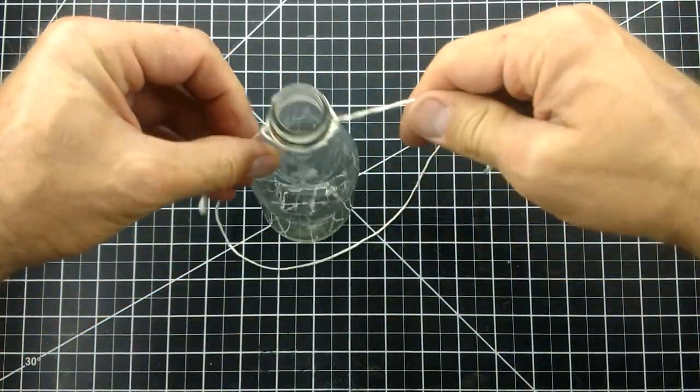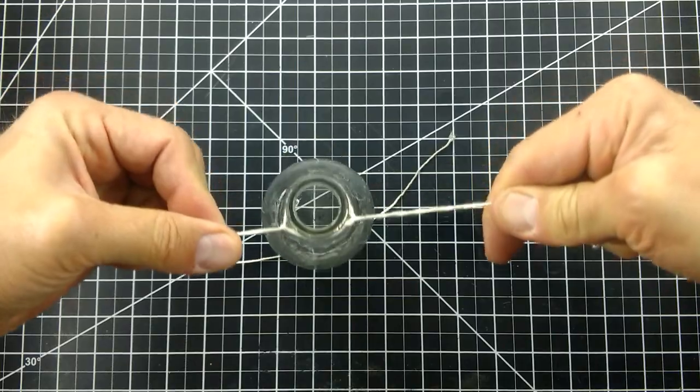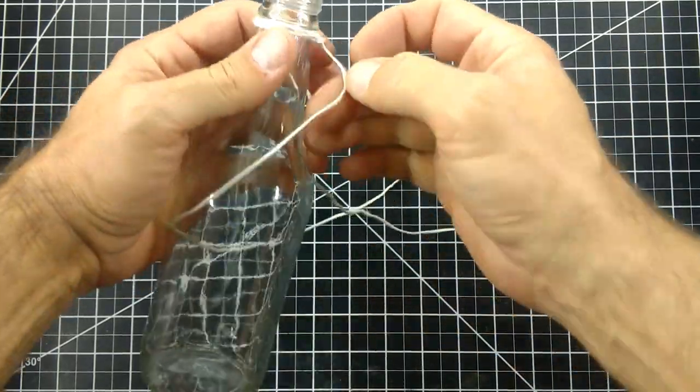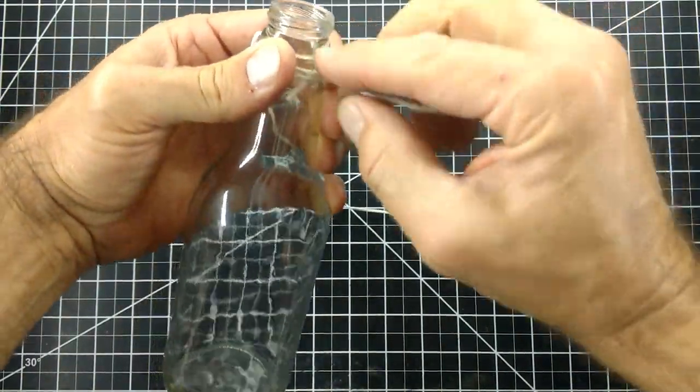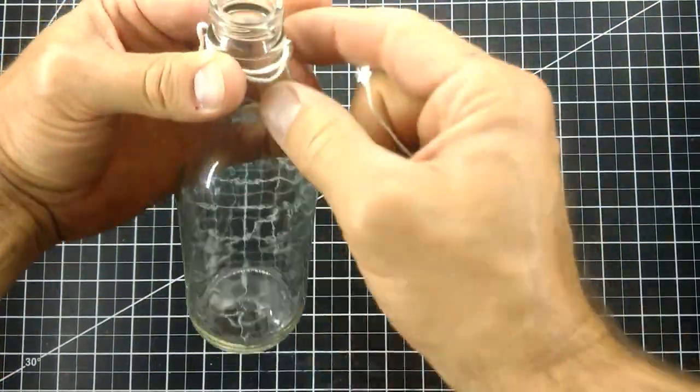I pull the strings in opposite directions so that I can see how centered they are to each other. They are off-centered, so I grab the other end of the string so that I can wrap it around the loops also. But this side, I'm going to wrap it in the opposite direction.